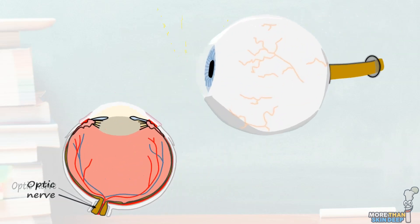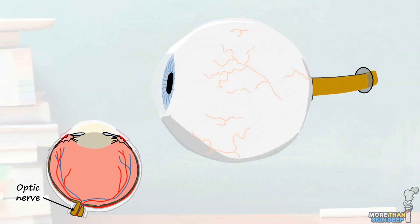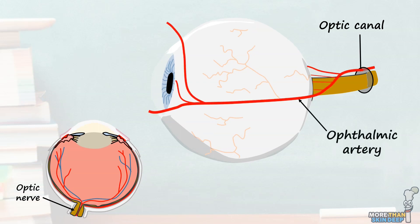The nerve impulses leave the eye via the optic nerve. The optic nerve exits the posterior orbit through the optic canal, which also contains the ophthalmic artery. The ophthalmic artery is the first branch of the internal carotid artery and provides the blood supply to the eye.